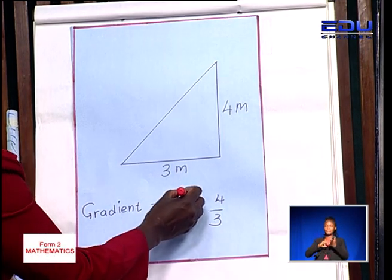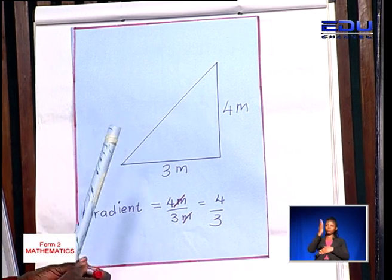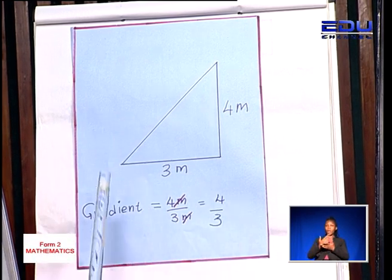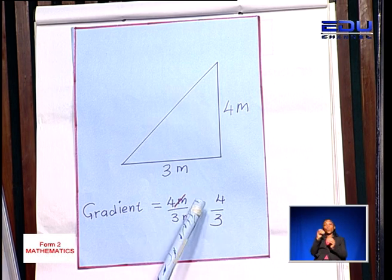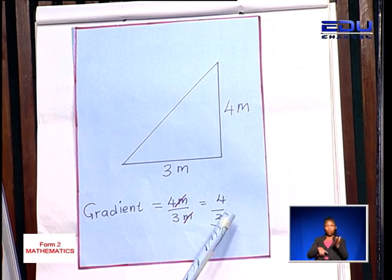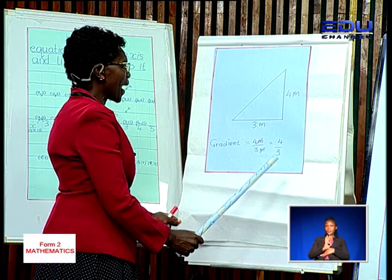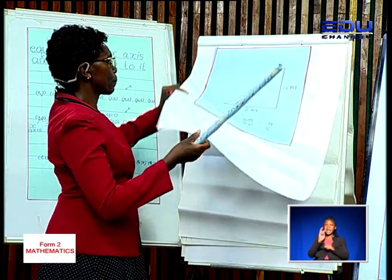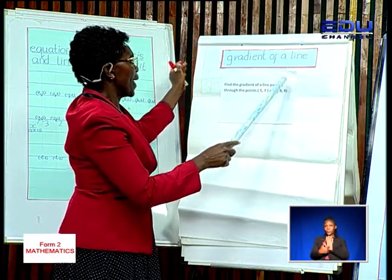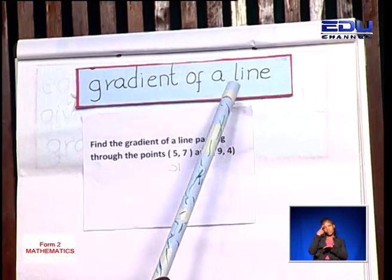The meter and the meter will cancel out. The gradient does not have units, so we end up with the gradient being equal to 4 over 3. We can look at an example: the gradient of a line.